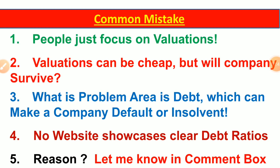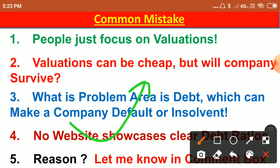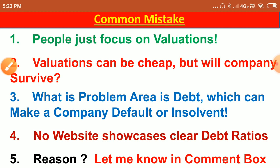Whenever we evaluate a company, there are a few mistakes we make. People just keep focusing on valuations - whether the price to earnings ratio is low, whether the price to book ratio is low. But valuation is just one criteria for knowing whether the stock is good. The big question is: will the company survive in the long run? That question can be answered with the help of debt ratios. If a company has a large amount of debt, it may not be able to pay in times of recession. Debt ratios are very hidden information, not clearly brought out by various websites.